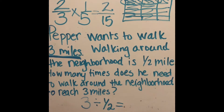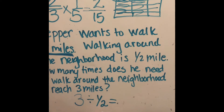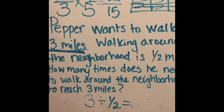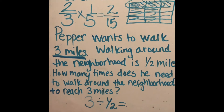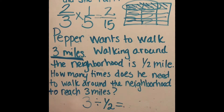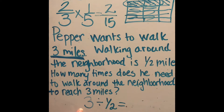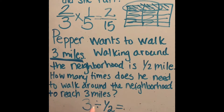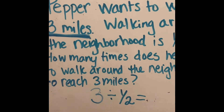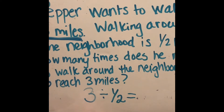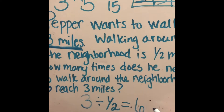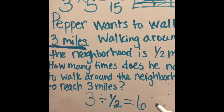Three divided by one-half means thinking about how many halves are in three. There are two halves in one, so if I had three I multiply two times three to figure out how many halves are in three — that gives six. He would need to walk six times around the neighborhood to get his three miles.